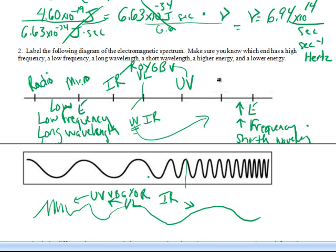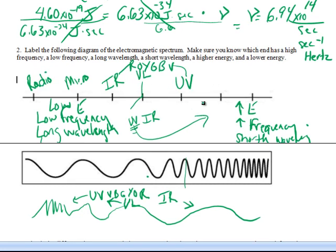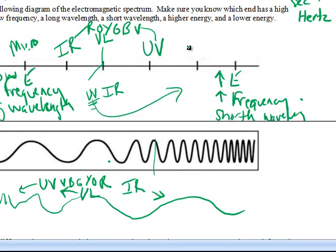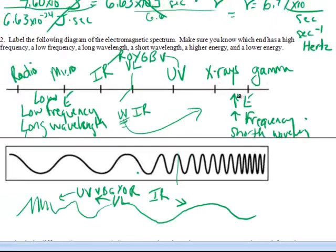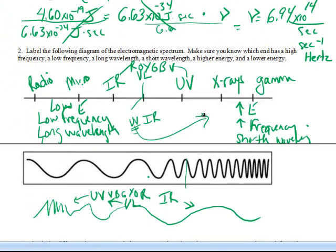On the high-energy side, we're getting closer together - more energy, higher frequency, shorter wavelength. We're going to have X-rays, and then the most damaging of the group is gamma rays. You should be able to label a diagram, decide which side is low energy and high energy, low frequency and high frequency, long wavelength and short wavelength, and then label it accordingly.